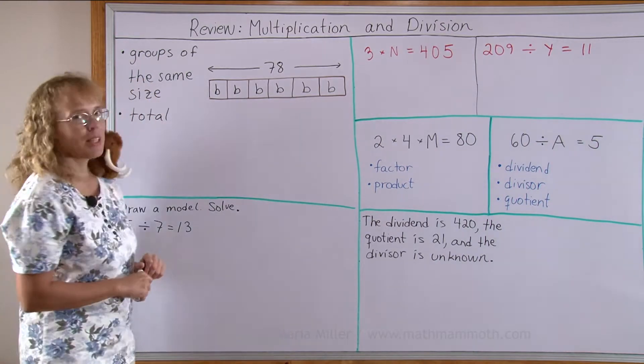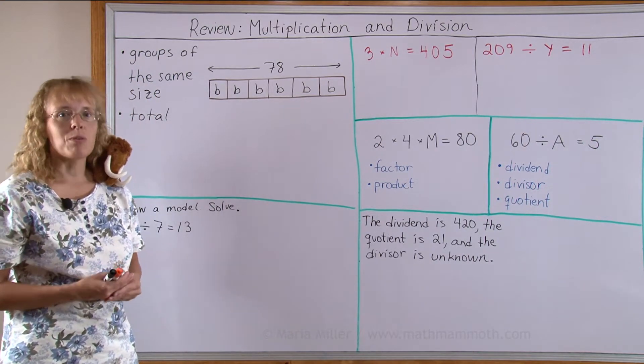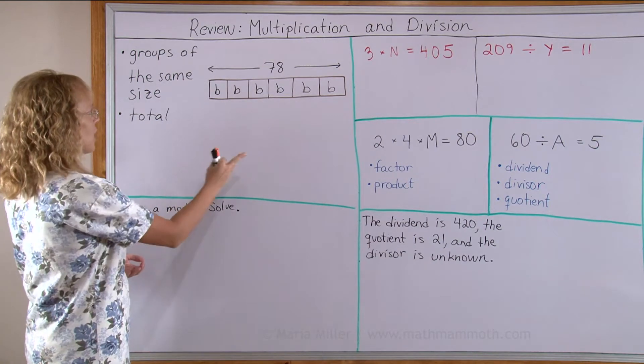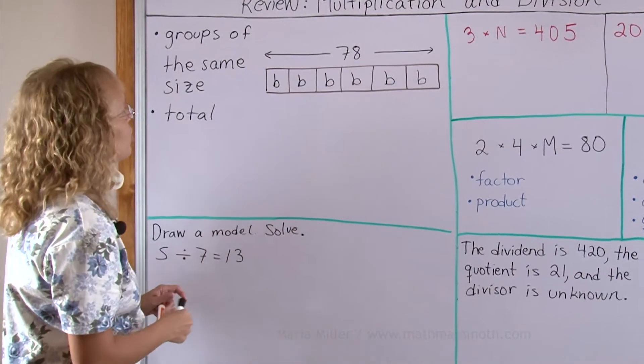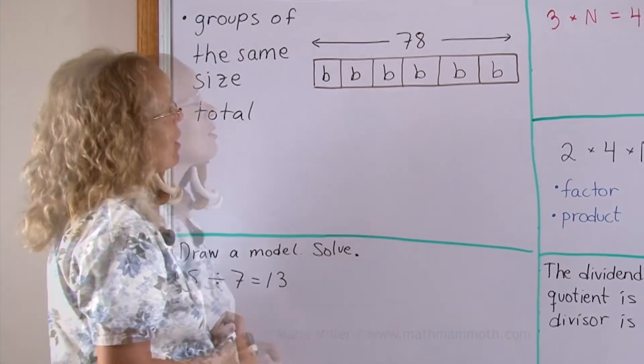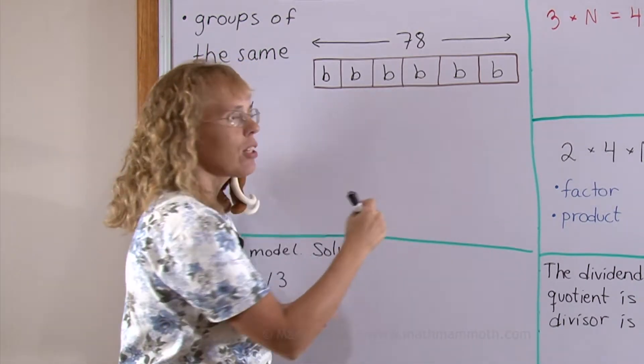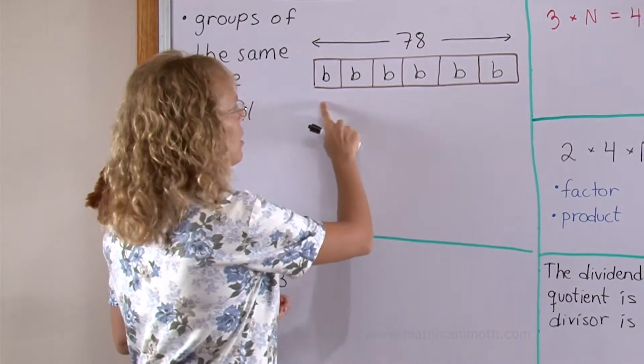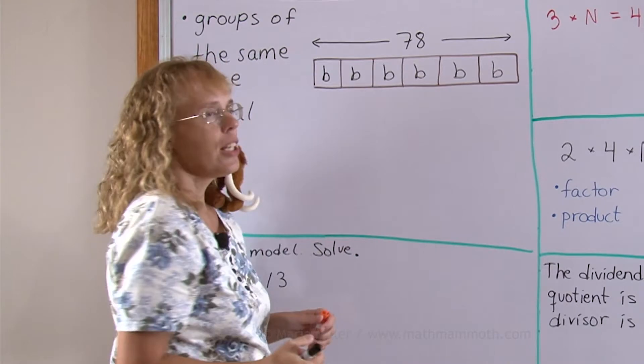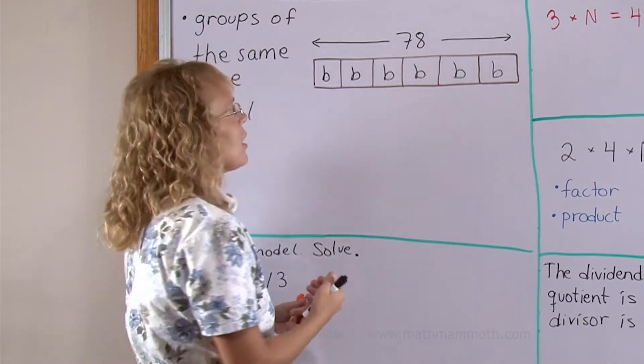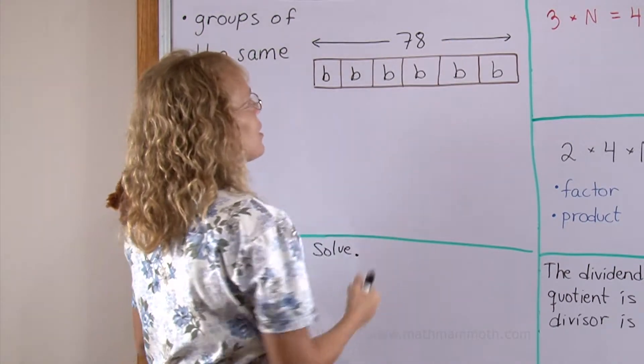Now both multiplication and division have to do with groups of the same size, groups of equal size and a total. And I drew here a bar model that illustrates this fact. Think of this as like a long board that is divided into equal sections. Each section here would be B long, or we don't actually know it, and the total length marked here is 78.